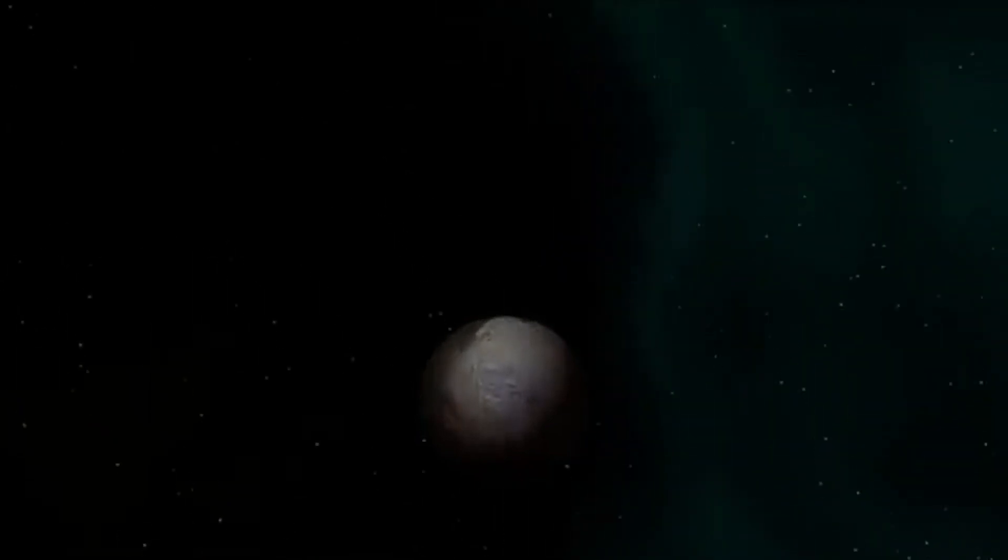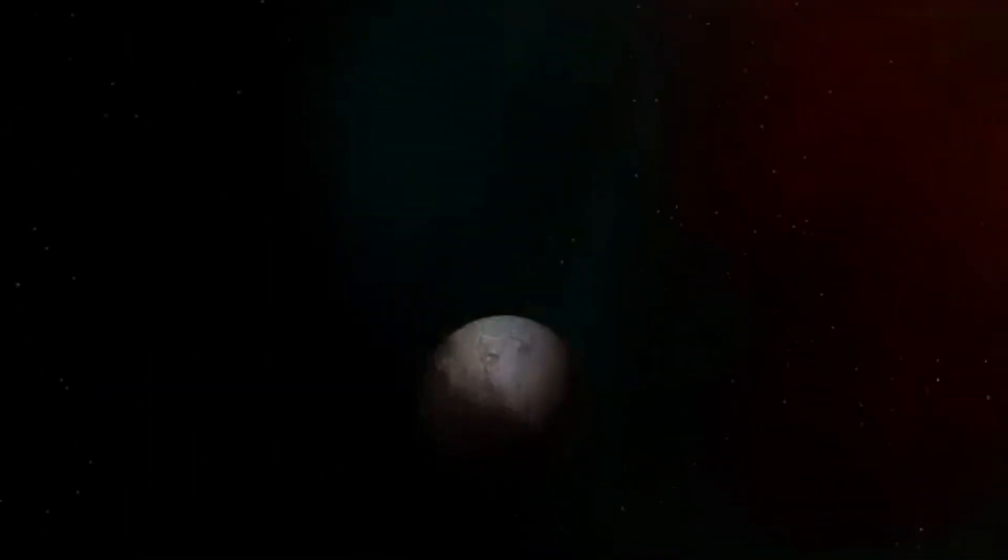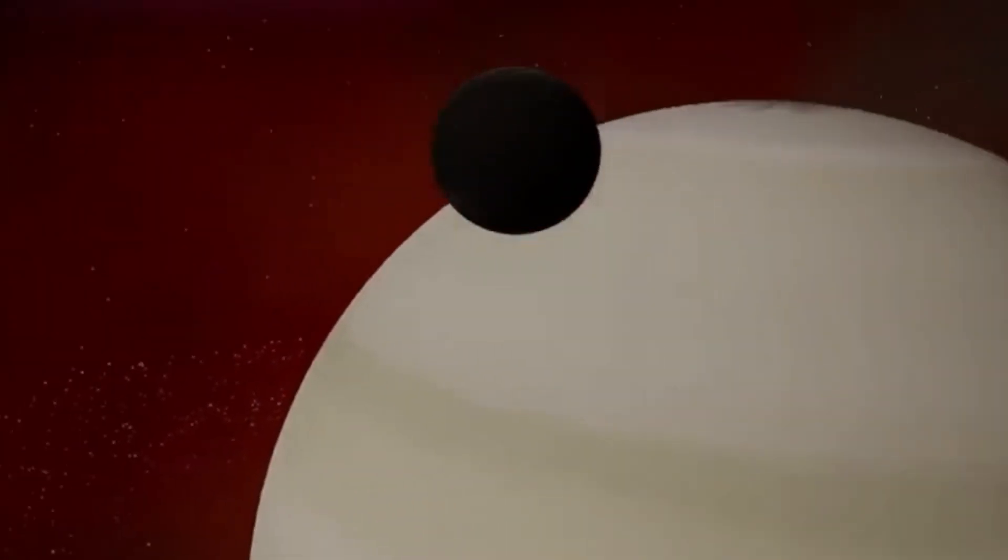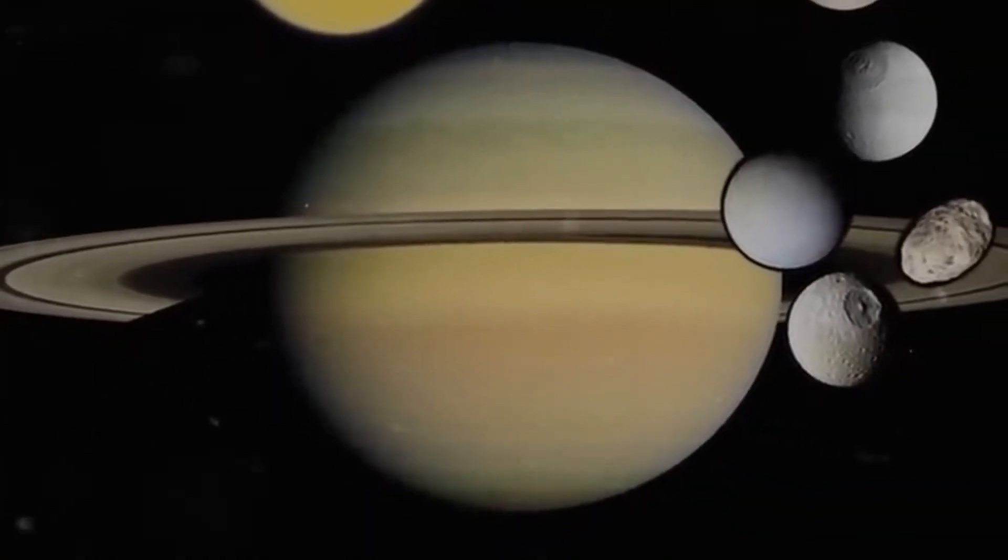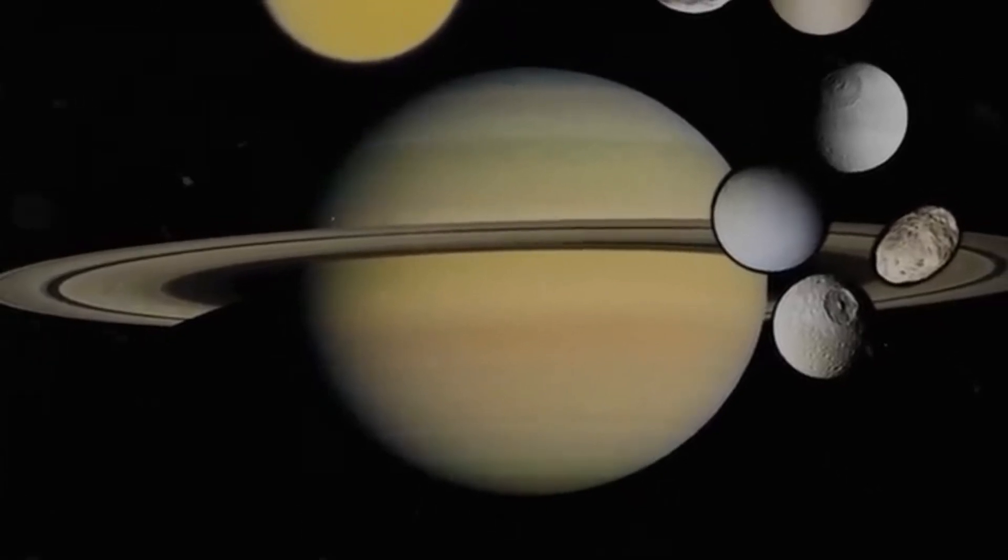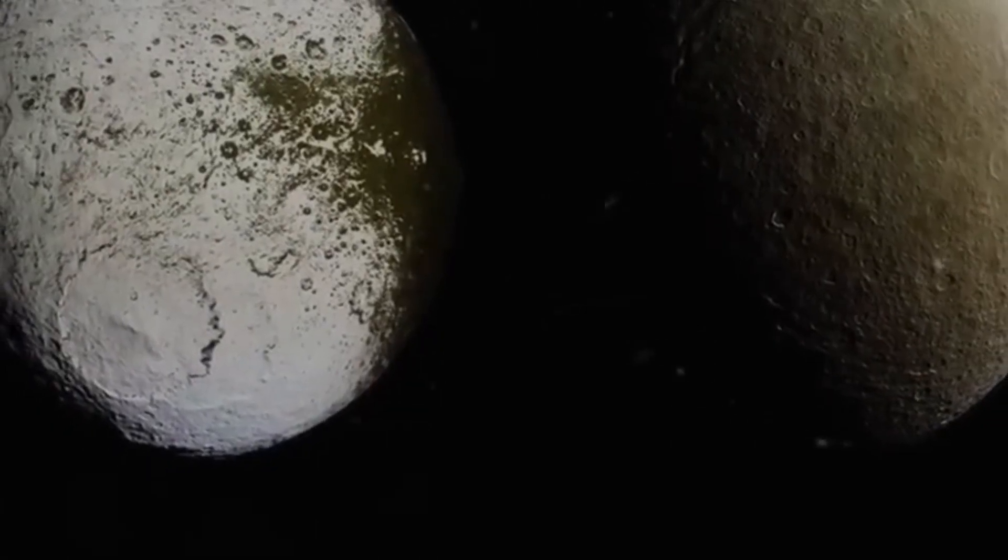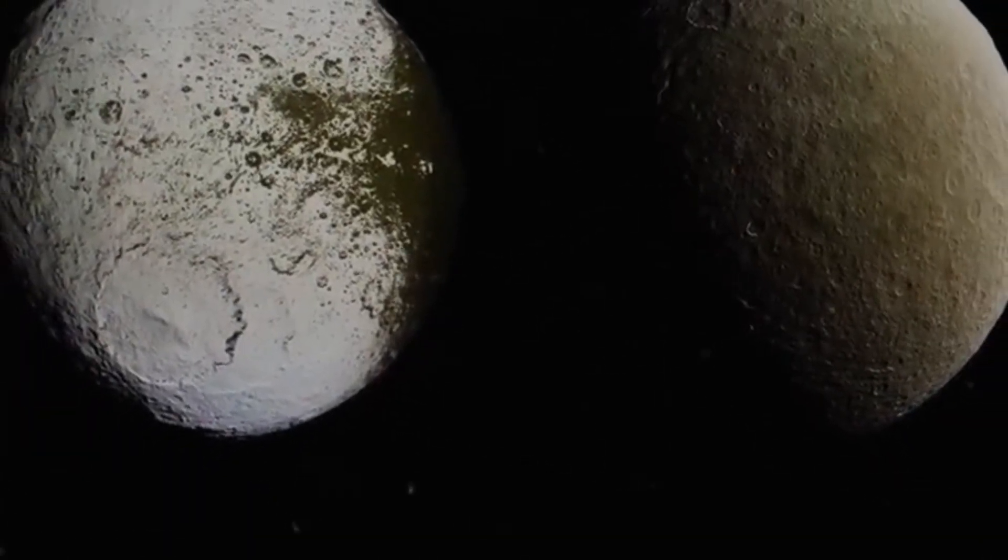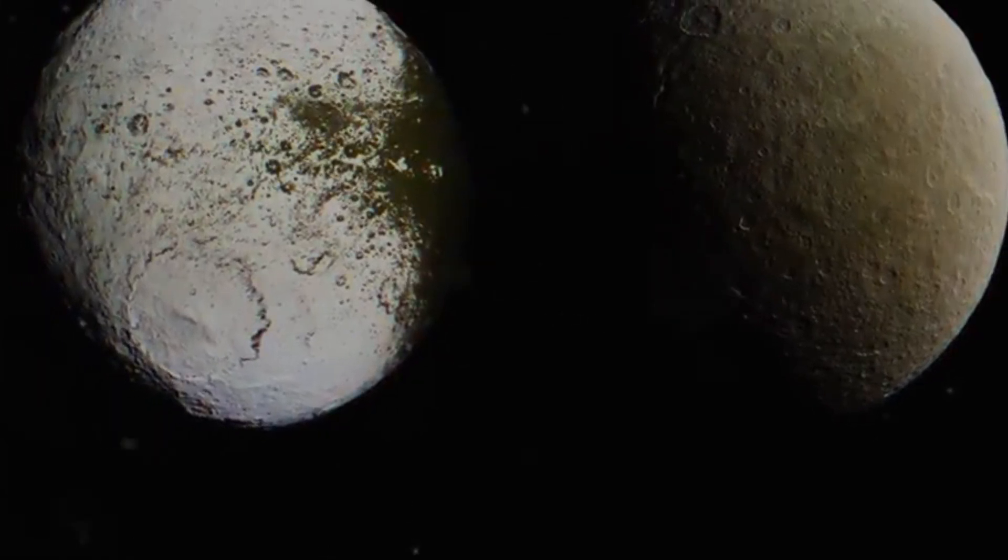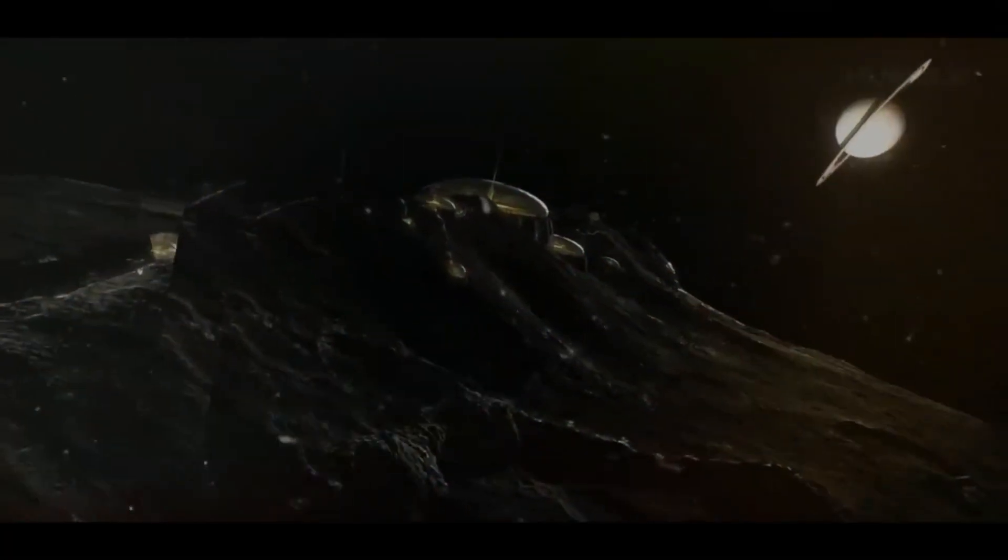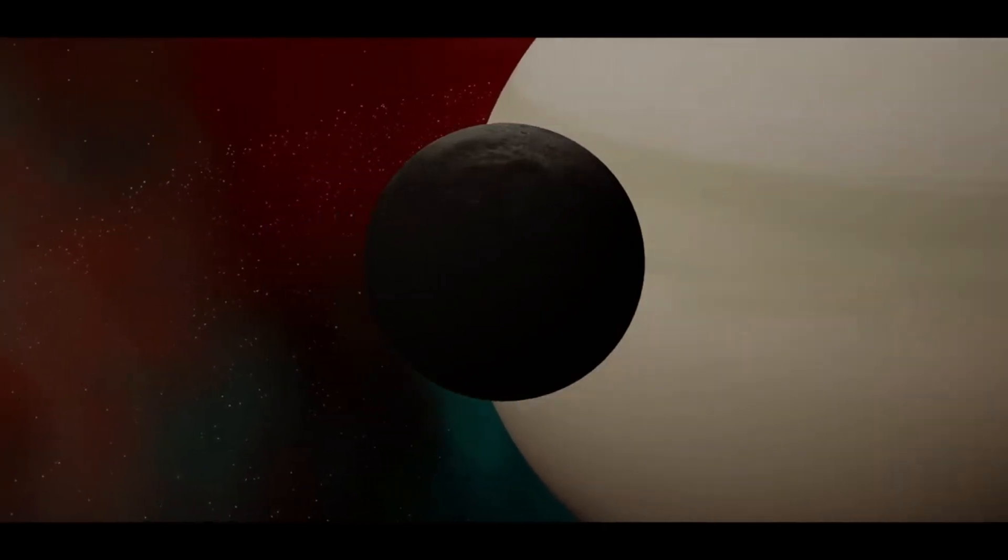Iapetus is the third largest of Saturn's satellites. Only Titan and Rhea are larger than it. Iapetus has an average diameter of 1471 kilometers. It has a density value of 1.8 grams per centimeter cubed. This is a very small value considering that it is slightly larger than that of liquid water on Earth. It is assumed that the composition of Iapetus is dominated by water ice. The distance between the satellite and Saturn is 13.5 million kilometers. This is the largest distance among the main satellites of the planet.